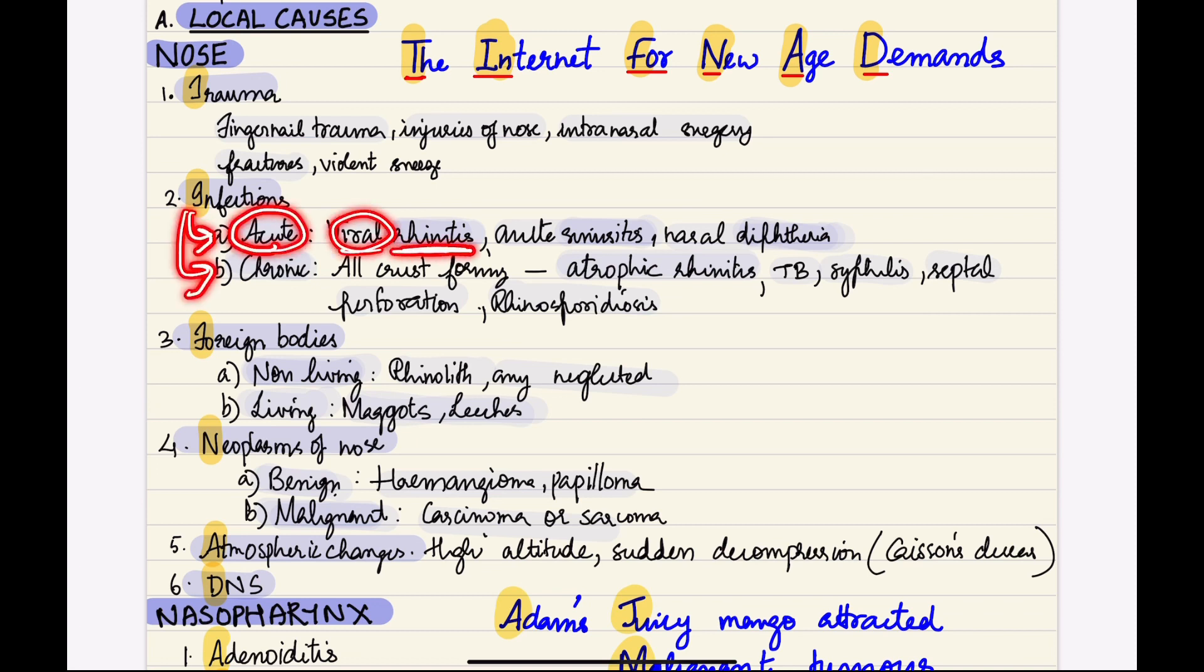Under acute infections we can write viral rhinitis, acute sinusitis, nasal diphtheria, etc. In chronic we can write all crust-forming diseases such as atrophic rhinitis and some granulomatous diseases such as TB, syphilis, septal perforation, or rhinosporidiosis.